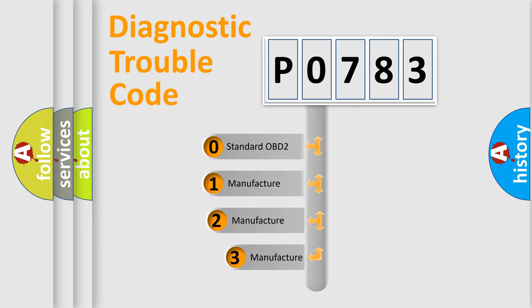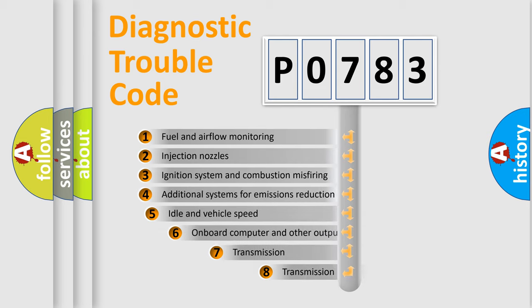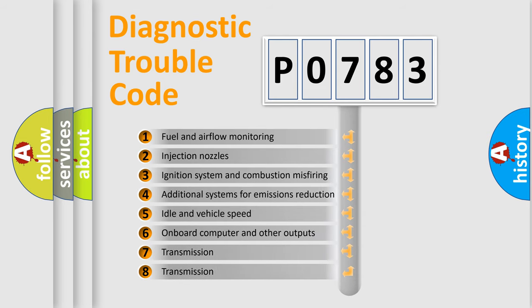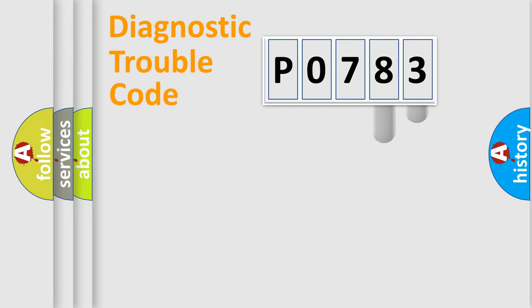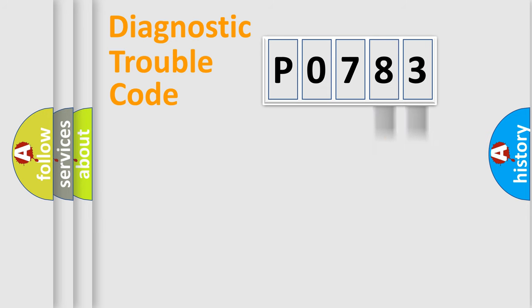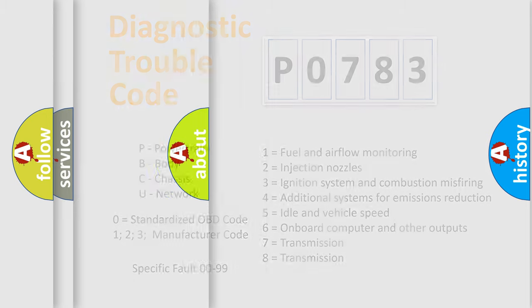If the second character is expressed as zero, it is a standardized error. In the case of numbers 1, 2, or 3, it is a more specific expression of a car-specific error. The third character specifies a subset of errors. This distribution is valid only for the standardized DTC code, and only the last two characters define the specific fault of the group.